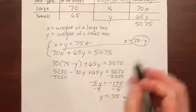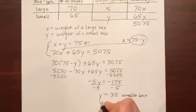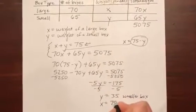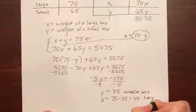And then I just have to put that 35 back into this equation to figure out the weight of the larger box. So x would be 75 minus 35, or 40 is the weight of the larger box.